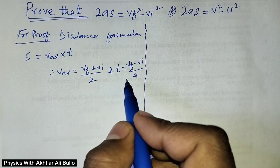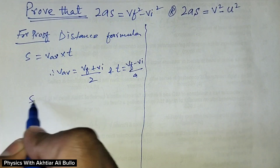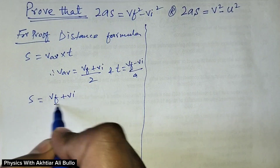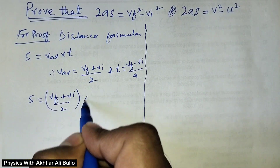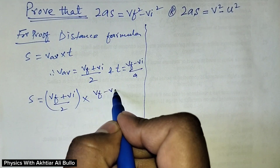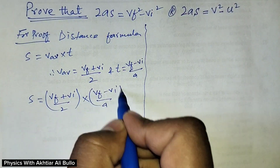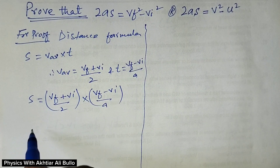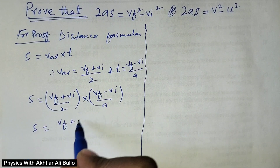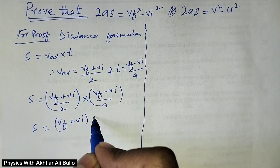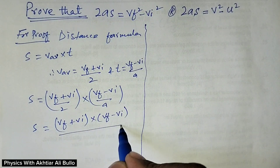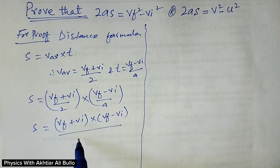So by putting these values, S will be equal to Vf plus Vi upon 2, multiplied by the value of time which is Vf minus Vi upon A. So S will be equal to Vf plus Vi into Vf minus Vi, upon 2A.